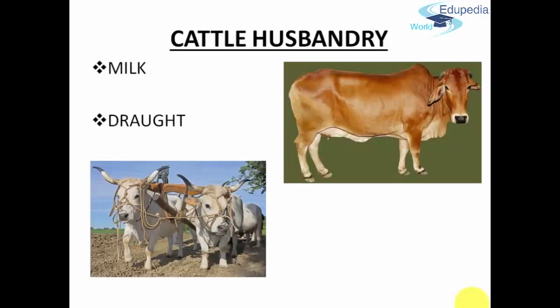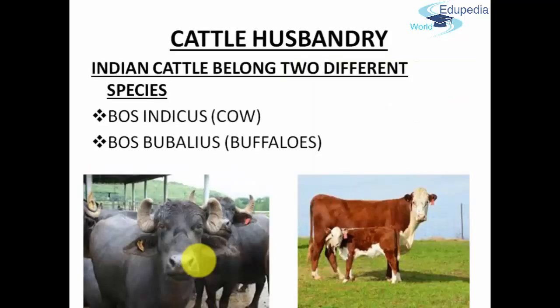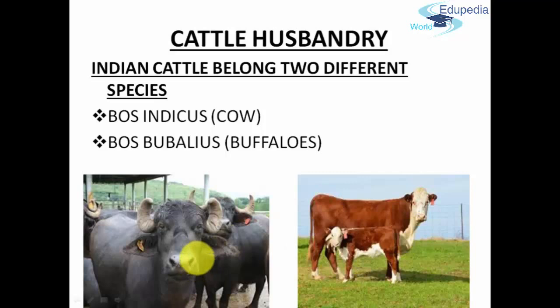So basically there are two categories. You can see here — this is a cow, a milk-producing animal, and the draught animals; this is how farmers utilize these animals to do their work. Indian cattle belong to two categories: Bos indicus, commonly known as the cow, and Bos bubalis, commonly known as the buffalo. On the right is a cow and this is a buffalo — two different species within the cattle category.